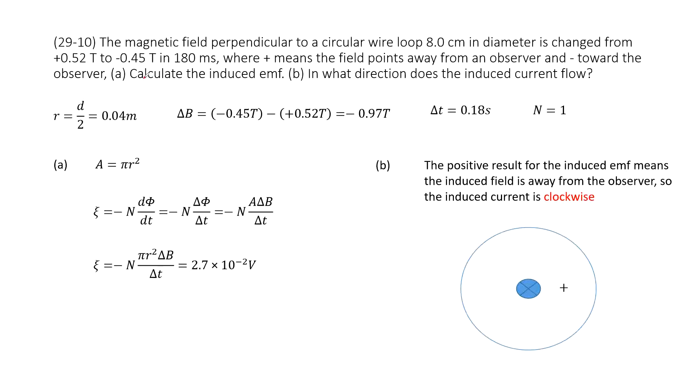So first, we need to find the induced EMF. Now let's see what quantity is given. First, the diameter is given, so we can calculate the radius there.